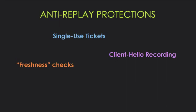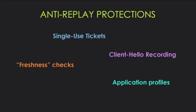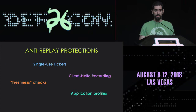The challenge with client hello recording is synchronizing that list in global distributed environments. Another mitigation specified in the RFC is freshness checks: when the client sends a Zero RTT message it includes a timestamp indicating when it was sent from the client's perspective. The server can reject any messages that arrive outside an acceptable time frame window. Another protection is application profiles. According to the TLS 1.3 RFC, application protocols must not use Zero RTT data unless it has a profile that defines its use — meaning the application should define which functionality or paths are exposed over Zero RTT. Application profiles is still a work in progress.